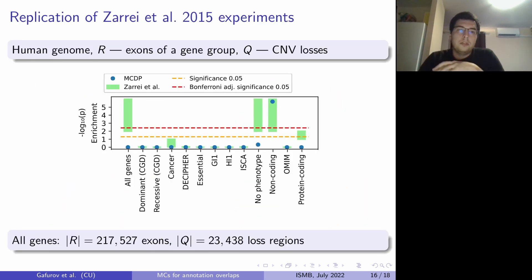We also replicated the experiments made by Zara et al. in 2015, where they have studied exons of several gene groups against CNV losses. And in this image, you can see that blue dots are our reported p-values and green rectangles are their p-value ranges from the original paper. And you can see that we are mostly in agreement though there are a couple of discrepancies. And we have studied those discrepancies in our paper.